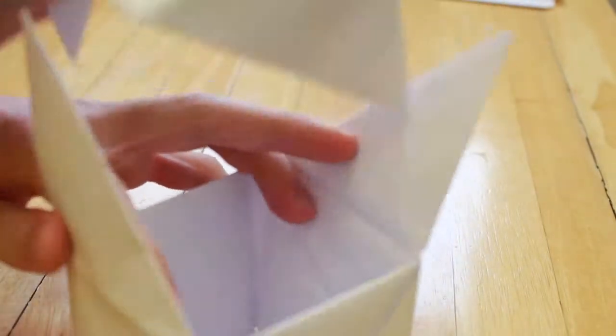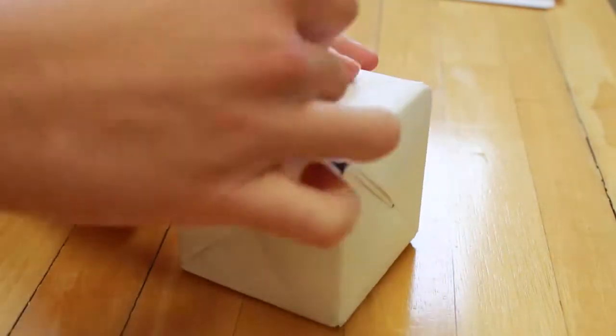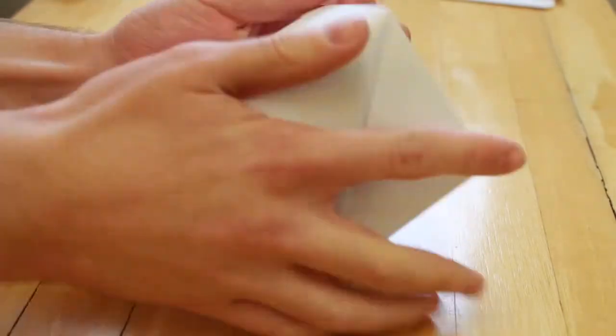Now slot in the 6th and final unit to create your Sonobe cube, remembering to keep the final flaps open so they can be slotted in last. And there you have it, your Sonobe cube finished.